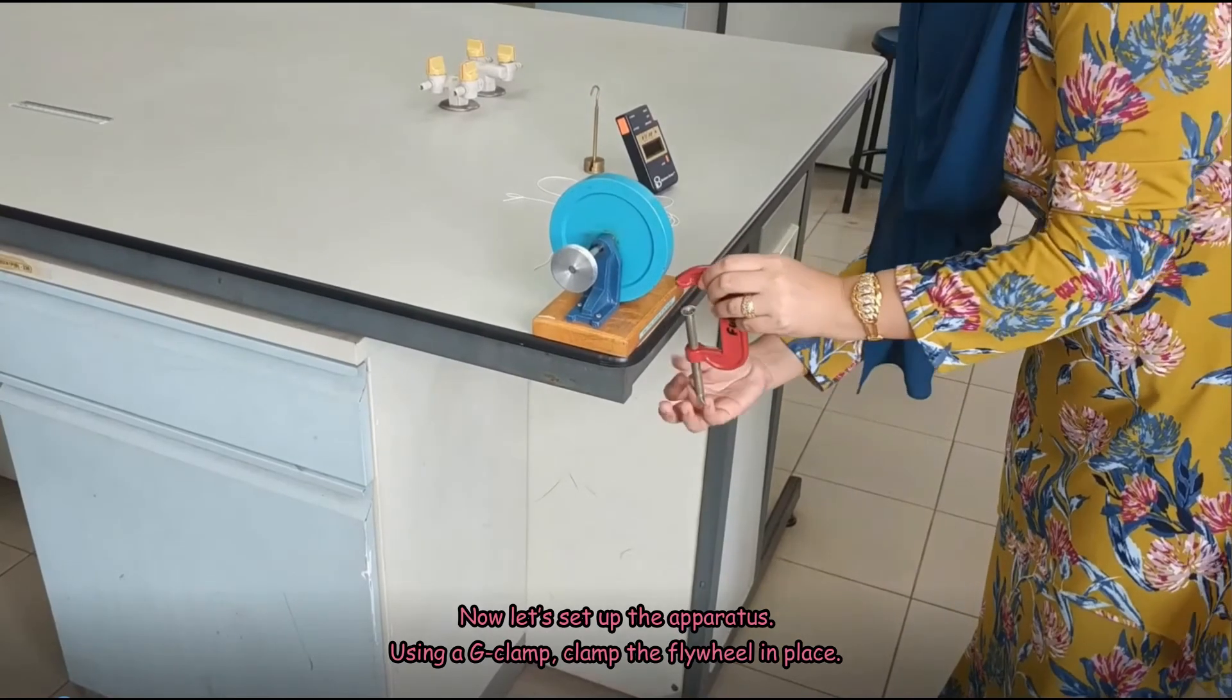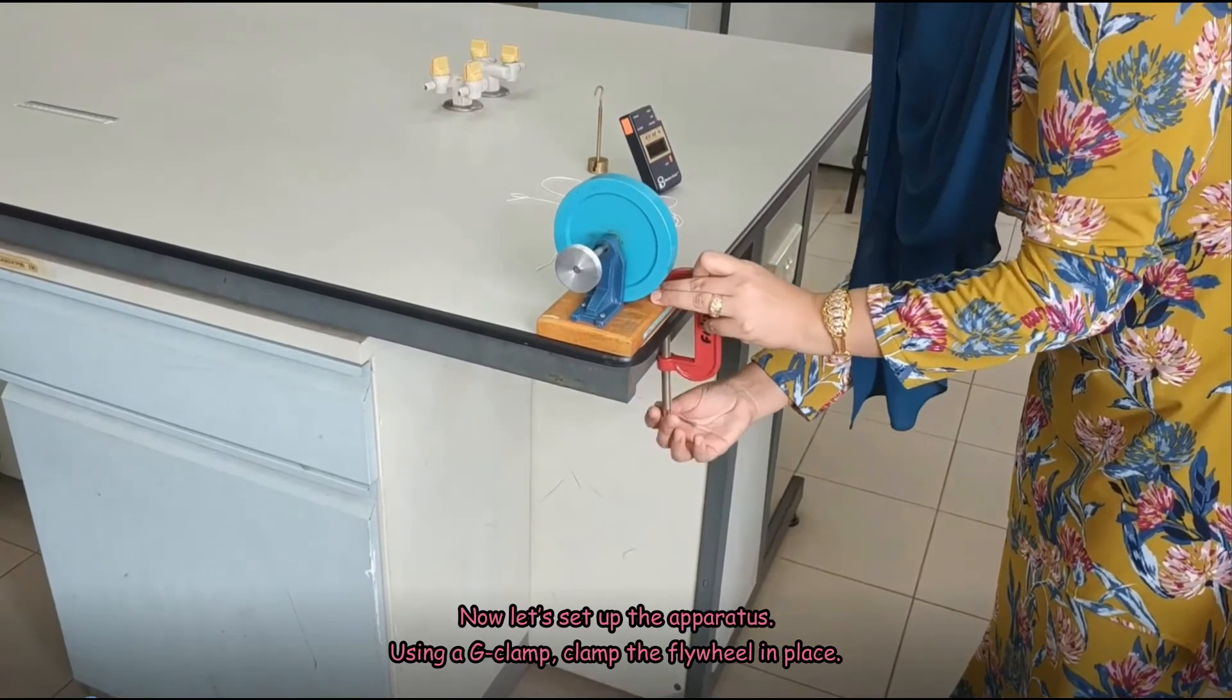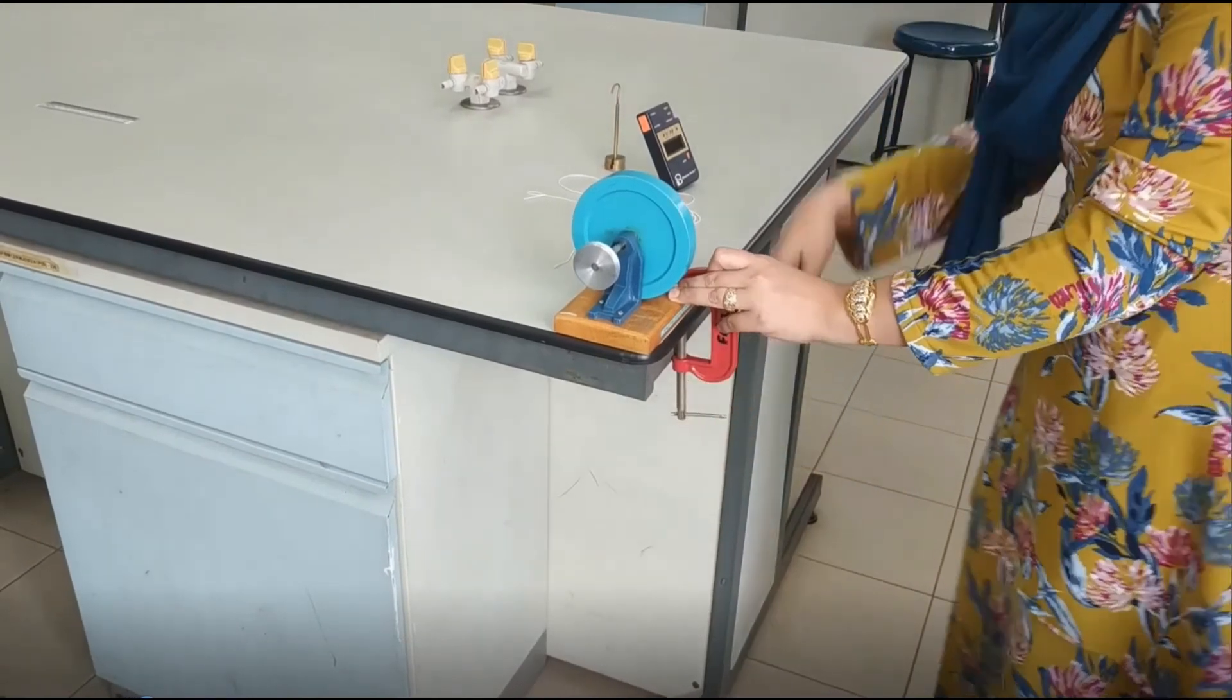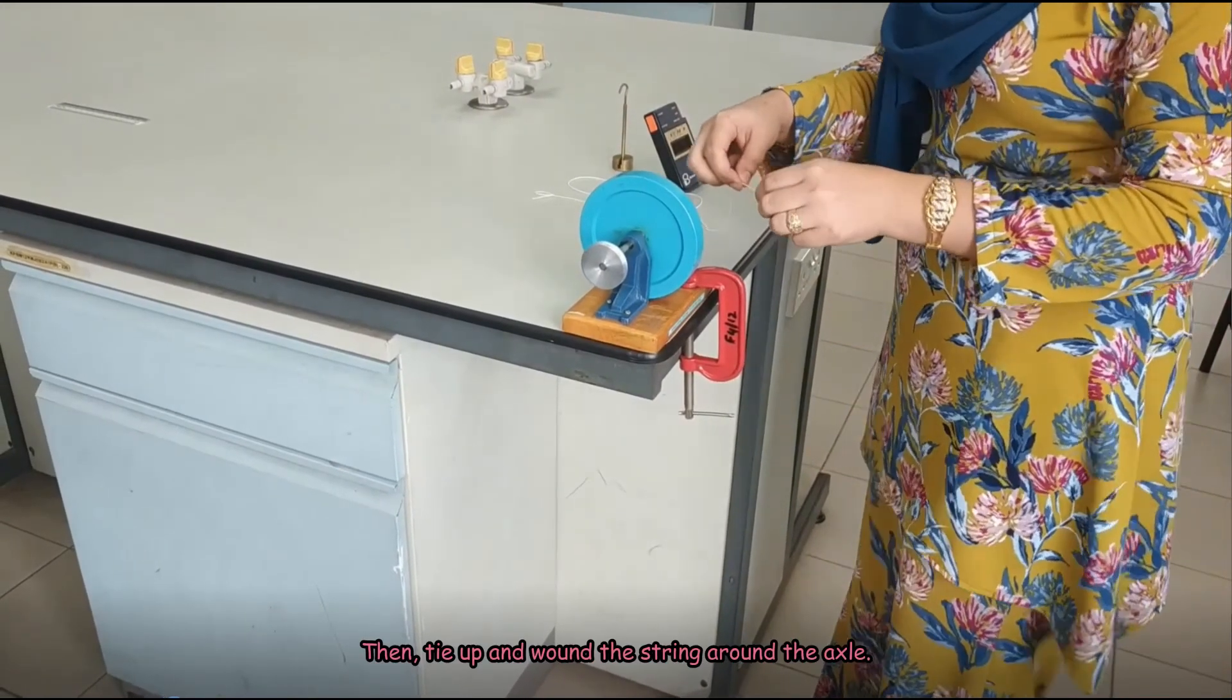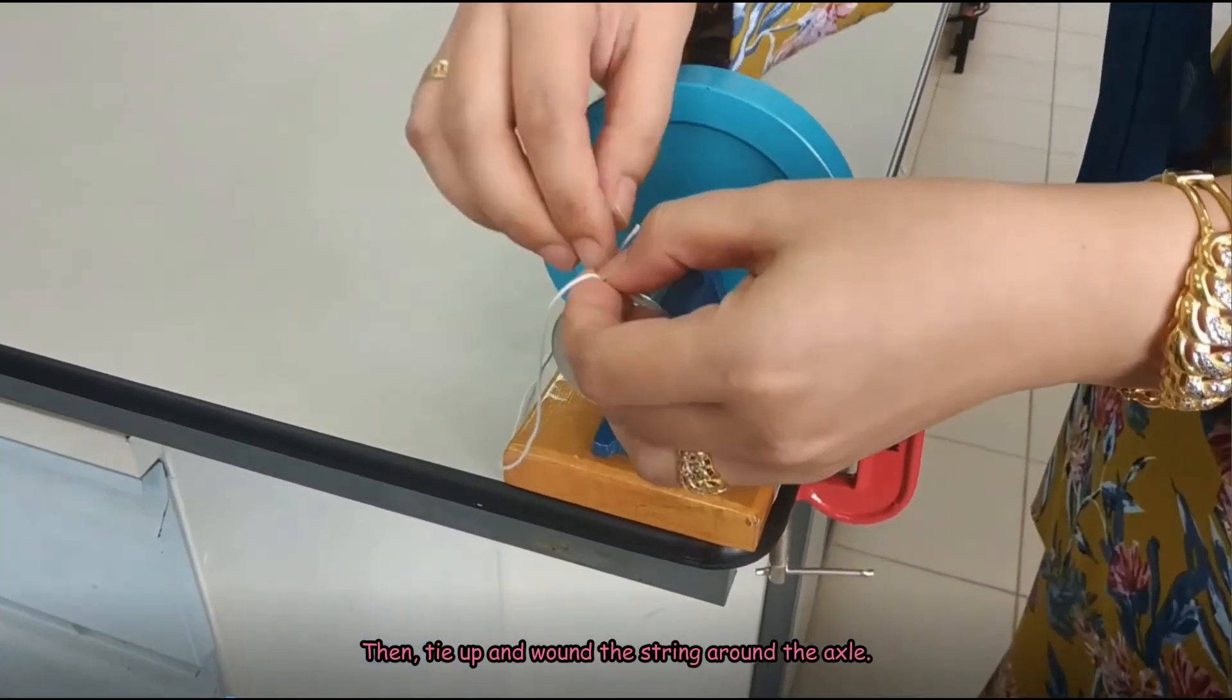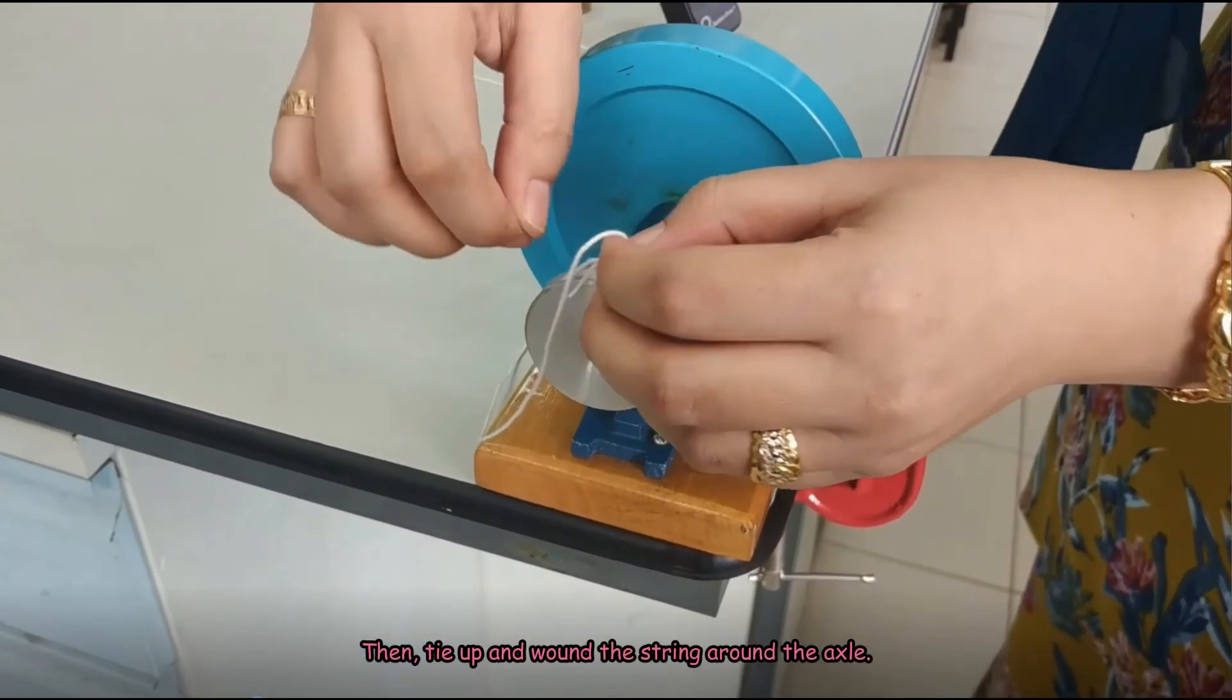Now, let's set up the apparatus. Using a G-clamp, clamp the flywheel in place. Then, tie up and wind the string around the axle.